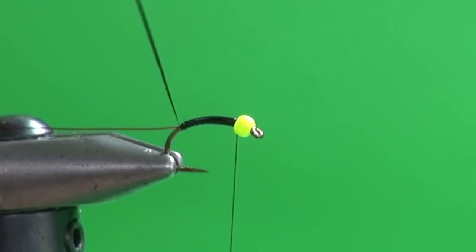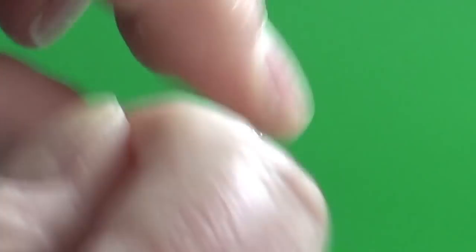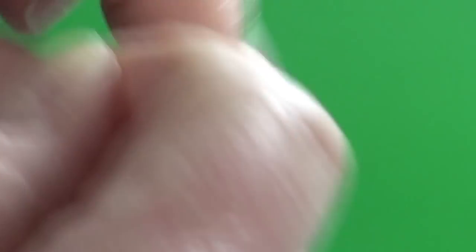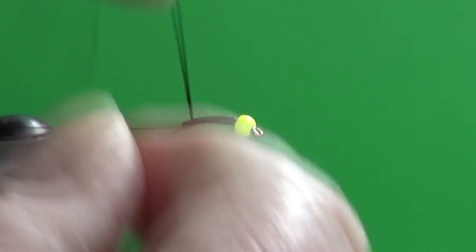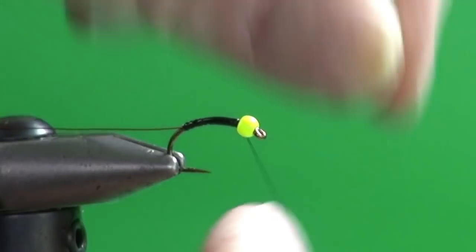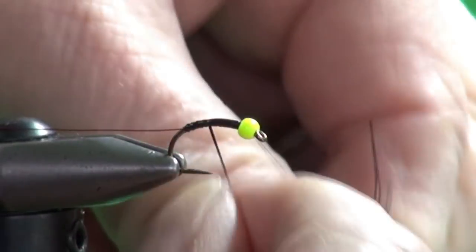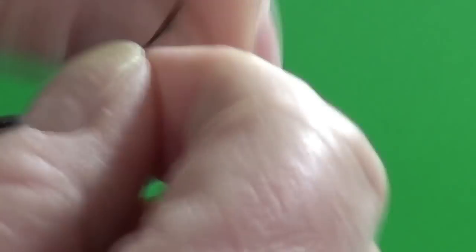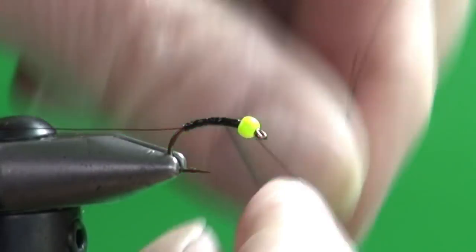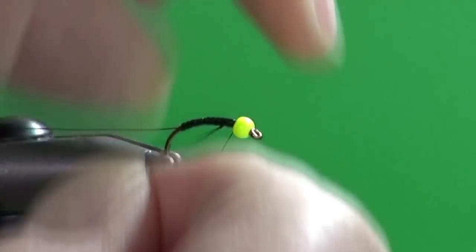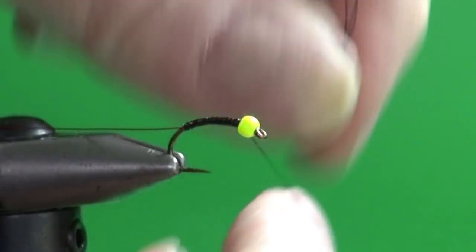And then we're just going to take our strands of Flashabou and wind them forward, one wrap right in front of the other. Being mindful not to strike the hook point because that's kind of hard on Flashabou. I'm just going to wind that forward. We can overlap the wraps a little bit more to further augment that taper.